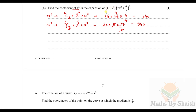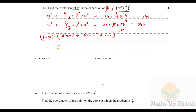To find the coefficient of x⁶ in (1 − x³)(2x² + a/x)⁶, we need the x⁶ term from multiplying 1 by the x⁶ coefficient (giving 540x⁶), and the x³ term from multiplying −x³ by the x³ coefficient (giving −540x⁶). Adding: 540 − 540 = 0. So the coefficient of x⁶ is 0.